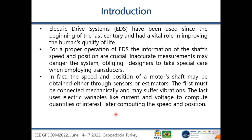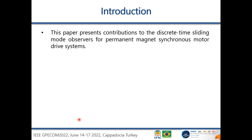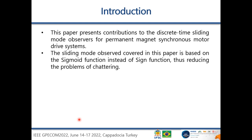Sensors may be connected mechanically and may suffer vibrations. Estimators use electric variables like current and voltage to compute quantities of interest and later compute the speed and position. Concerning sensorless electric drive systems in which encoders are not used, one of the most used is the sliding mode observer. This paper presents contributions to discrete-time sliding mode observers for permanent magnet synchronous motor drives, as usually sliding mode observers are presented in continuous-time domain. In this paper we make contributions directly in discrete time, also using superior differentiators and integrators.